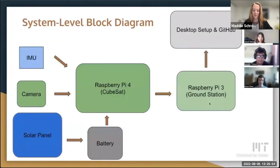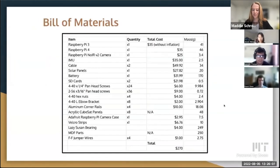Here's also a system block diagram. We have our IMU, camera, solar panel, and battery all going to our Pi 4, and then that all goes to our Pi 3, which then gets uploaded to desktop and GitHub. We estimate the total cost for each CubeSat was around $270.